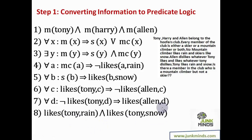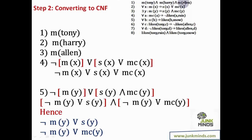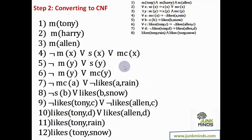The question is: is there a member in the club who is a mountain climber but not a skier? We need to convert everything to CNF. Using the laws from the previous video, we eliminate implication operators: for the member statement, eliminating AND operators makes member(Tony), member(Harry), member(Alan) independent. For the implication, not of left-hand side OR right-hand side gives not member(X) or skier(X) or mountainClimber(X). All statements are converted to CNF for step two.